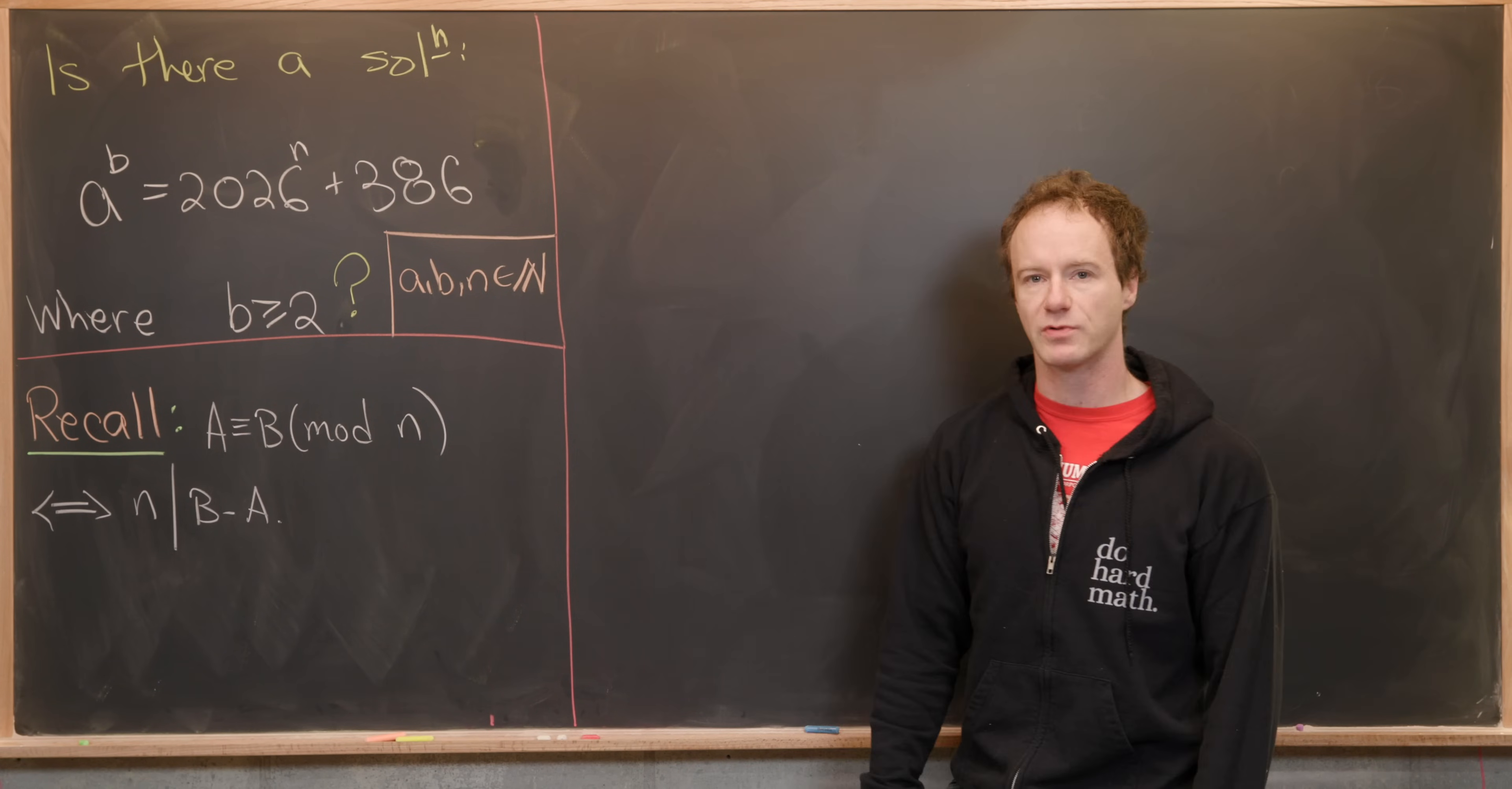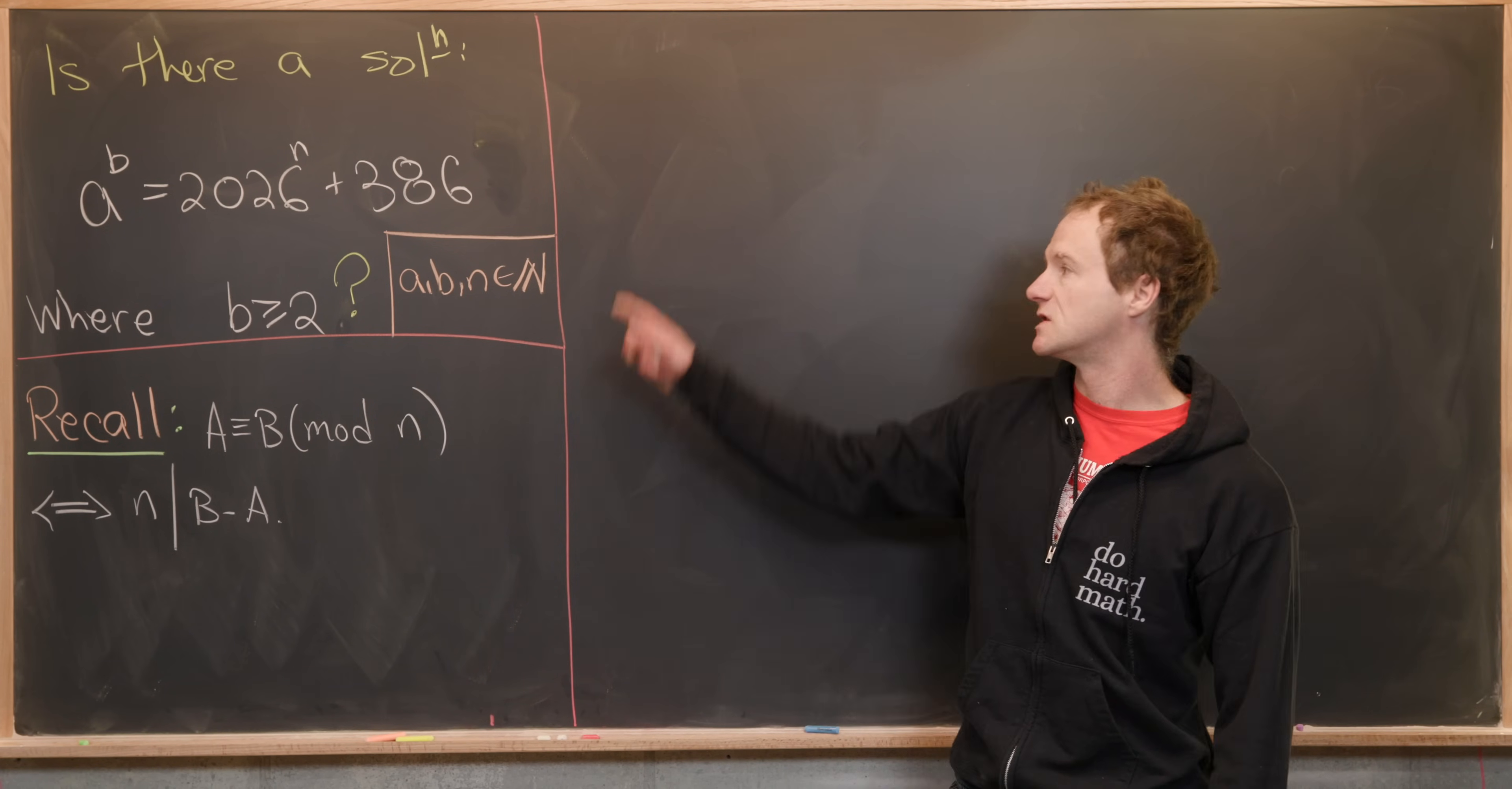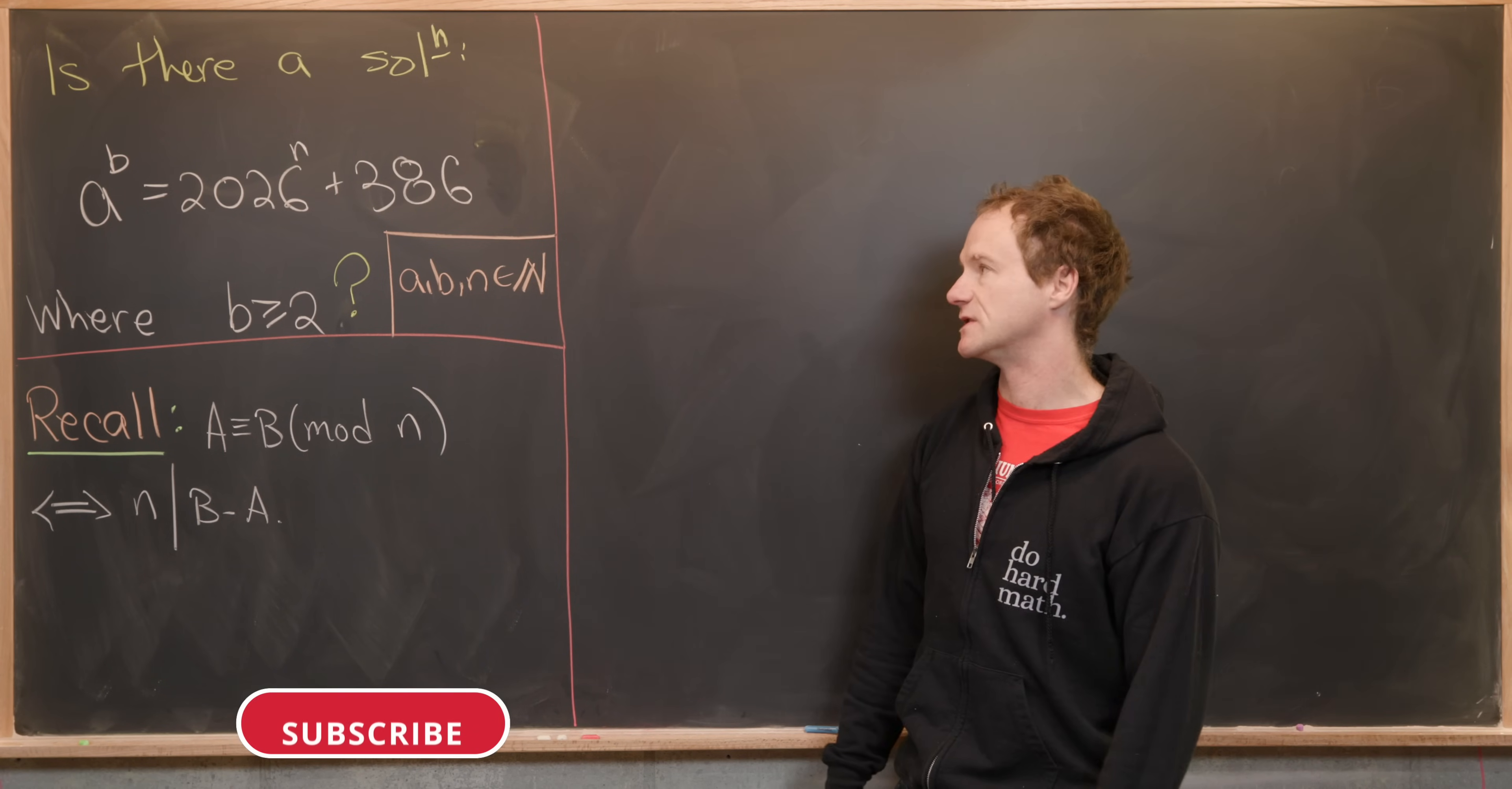Here we're going to look at a nice and quick number theory problem. So we want to determine if there is a solution to the following equation over the natural numbers, in other words the positive integers.